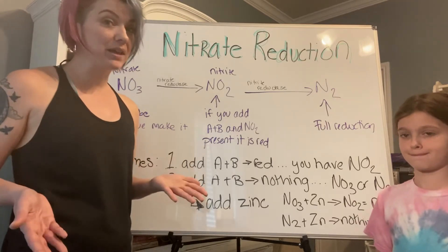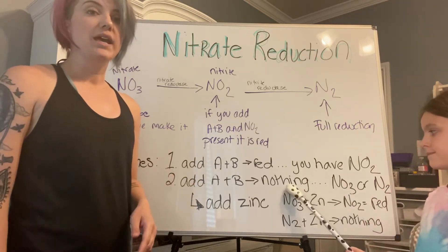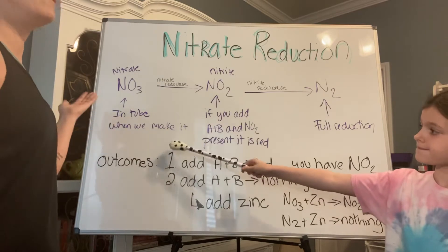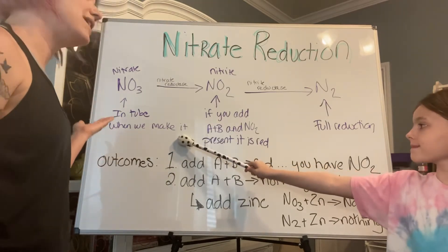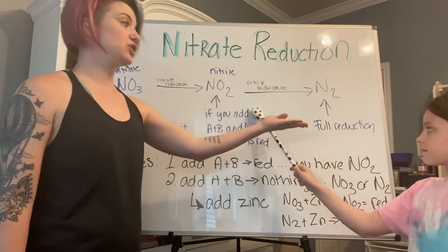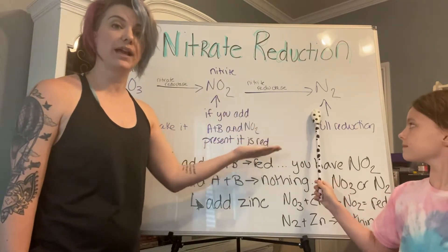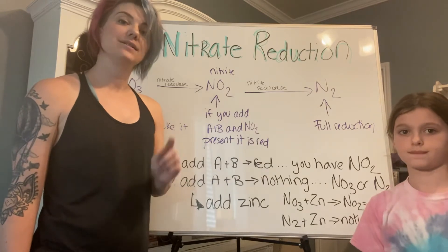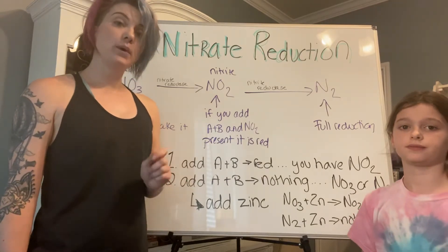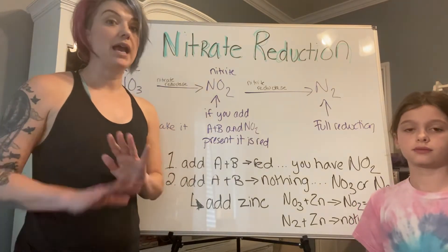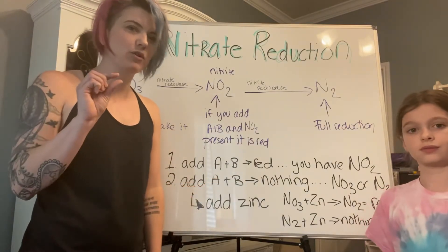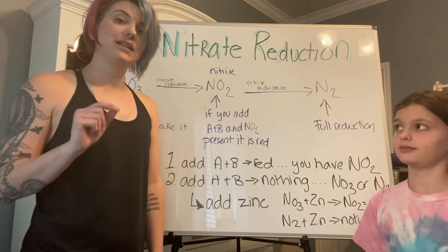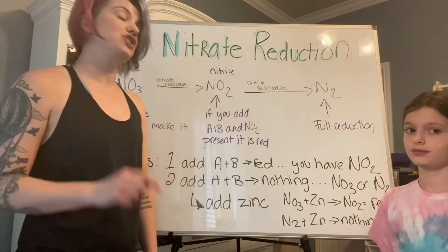If we add reagents A and B and nothing happens, we don't know if the bacteria did nothing and we still have nitrates in the tube, or if it went through full reduction all the way down to molecular nitrogen. To determine that, we have to add zinc dust.